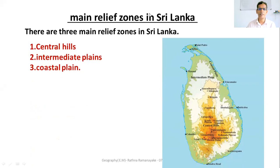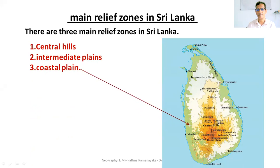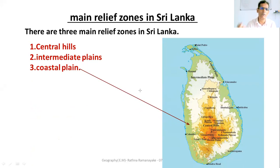Here you can see — look at the map and identify the relief zones. In light green colour you can see the Coastal Plain. The area from sea level up to 30 metres belongs to the Coastal Plain.